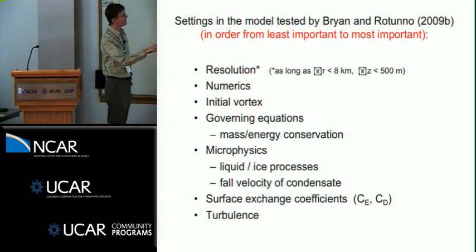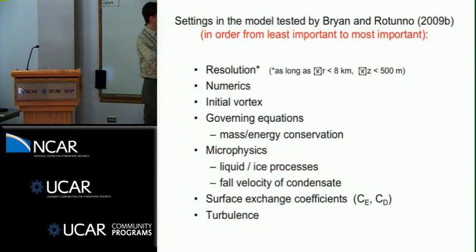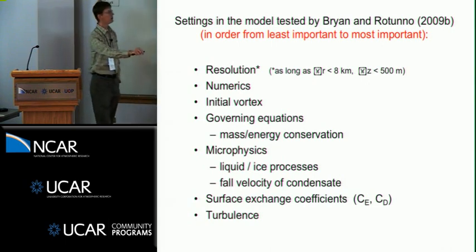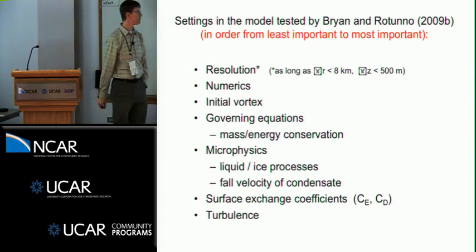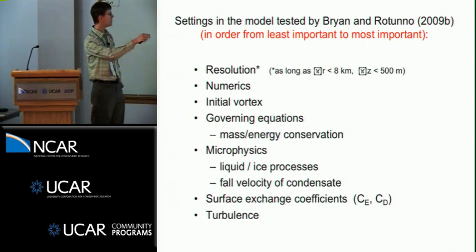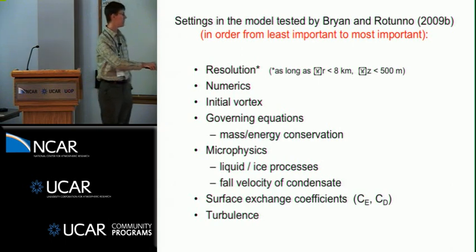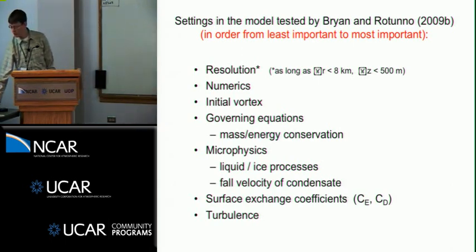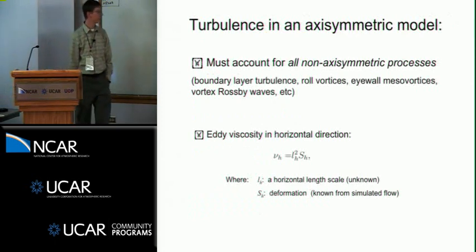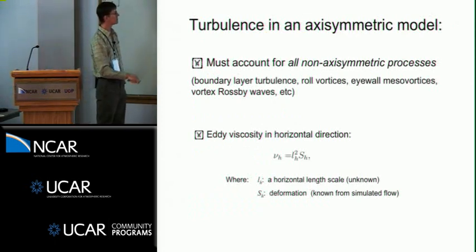I would say resolution is not important as long as you have some critical resolution. We found that it was a delta r less than 8 kilometers, so horizontal grid spacing less than 8 kilometers and vertical grid spacing less than 500. These numbers will not hold up in a three-dimensional model, so be careful about translating this to other modeling systems. Of more importance are these last three: the fall velocity of condensate, surface exchange coefficients, and turbulence. And I'm going to talk about the turbulence here for the rest of my talk.